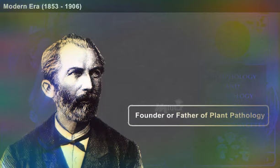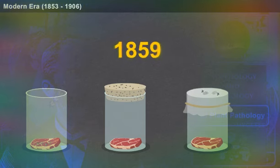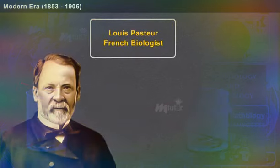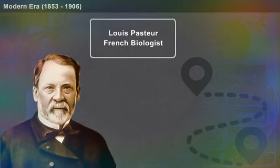He was regarded as the founder and father of plant pathology. In 1859, the theory of spontaneous generation was finally disproved by Louis Pasteur, a French biologist, and this changed the way scientists thought.